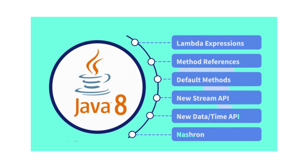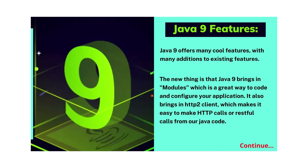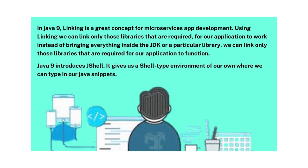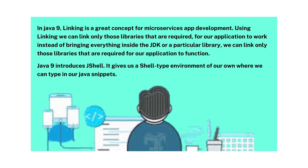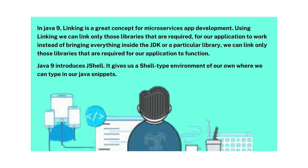We have understood the main features of Java 8 in detail. Here in this image you can see all features of Java 8 in one frame. Now let's understand the features of Java 9. Java 9 offers many cool features with additions to existing features. The new thing is that Java 9 brings in modules, which is a great way to code and configure your application. It also brings in an HTTP/2 client, making it easy to make HTTP or RESTful calls from Java code. In Java 9, linking is a great concept for microservices app development — using linking we can include only those libraries required for our application instead of bringing in everything from the JDK.